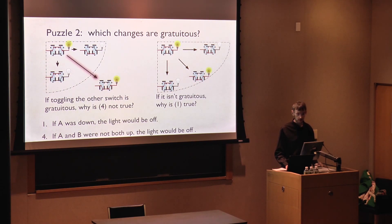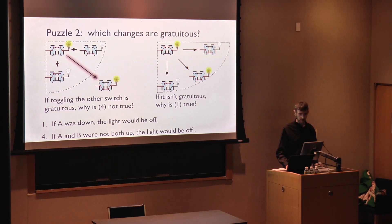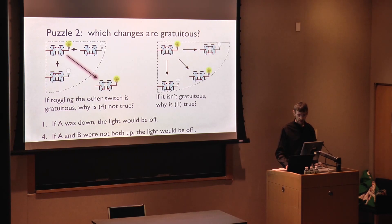But then what about sentence four? If switch A and switch B were not both up, the light would be off. Why is that sentence not true? We disagree with it because it might be that both switches have been toggled at the same time. For this sentence, it seems that toggling A and B together is not gratuitous, after all, as in the image on the right. Many semanticists believe that what counts as gratuitous shouldn't differ from one sentence to the next. But what our sentences show is that that can't be right. So what determines what counts as gratuitous for any given sentence? That's the second puzzle.